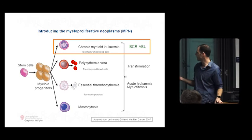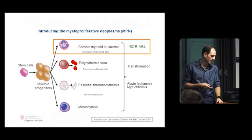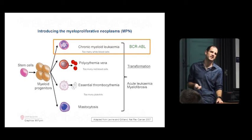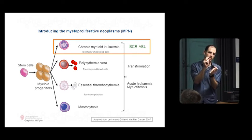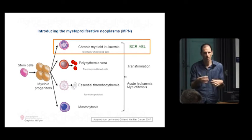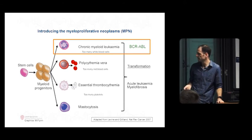They're linked by the fact that they have a risk of transformation either to myelofibrosis or acute leukemia. And they're linked because they're actually caused by a point mutation in a gene in the stem cell population that causes these cells to grow too fast and make too many cells downstream.